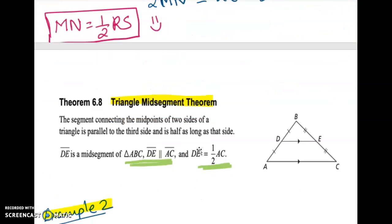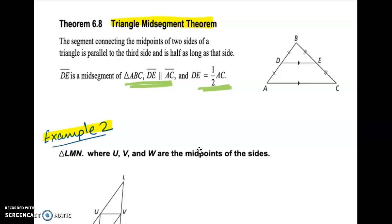Let's try one more. We just proved that if it is a mid-segment, then the mid-segment will be parallel to the opposite segment and half the length of the opposite segment. That is basically Theorem 6.8, called the Triangle Midsegment Theorem. It states: if DE is the mid-segment of triangle ABC, then DE is parallel to AC, and DE equals half of AC. Also, since D is the midpoint of AB, AD equals BD; and since E is the midpoint of BC, BE equals EC.